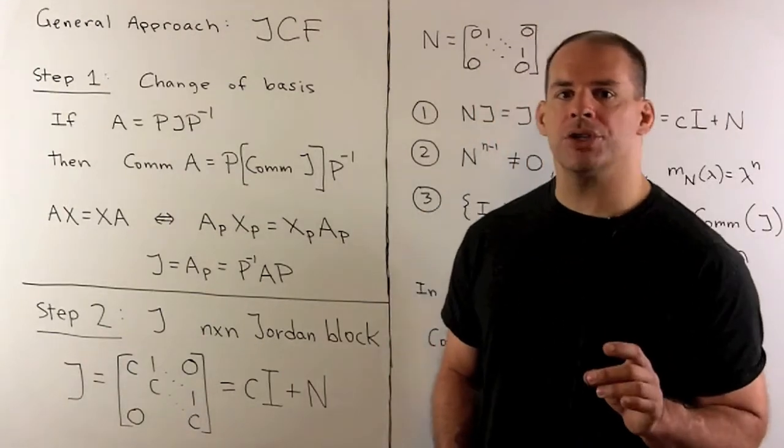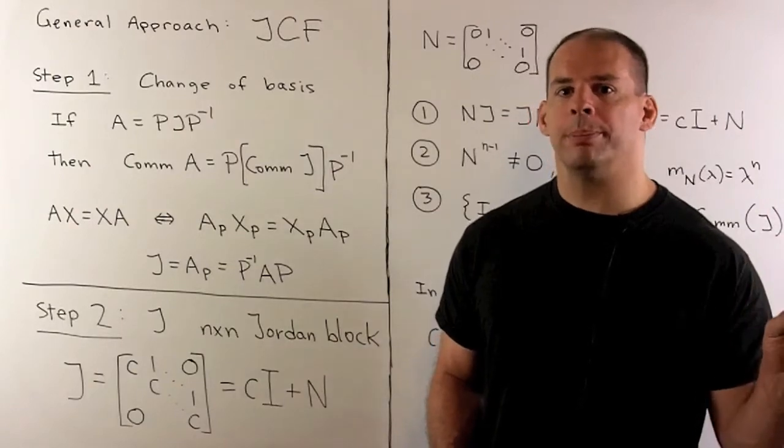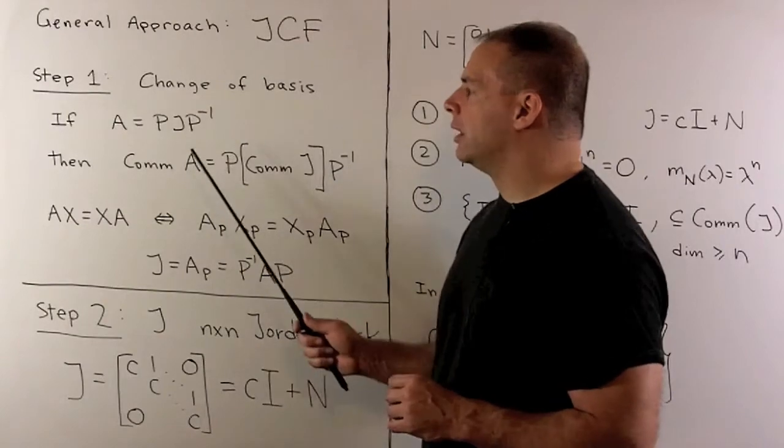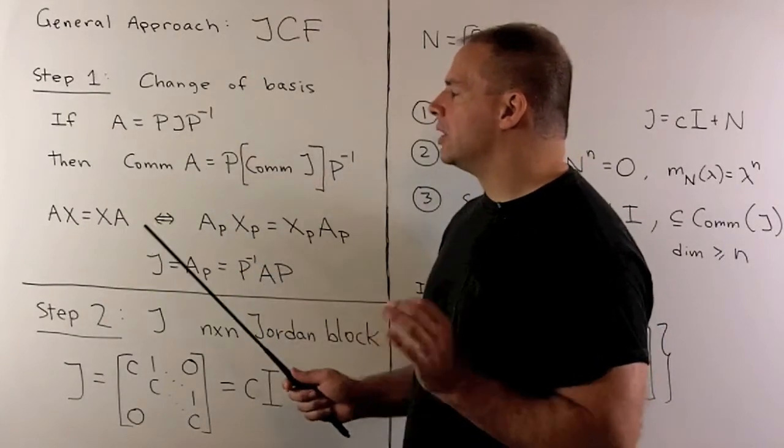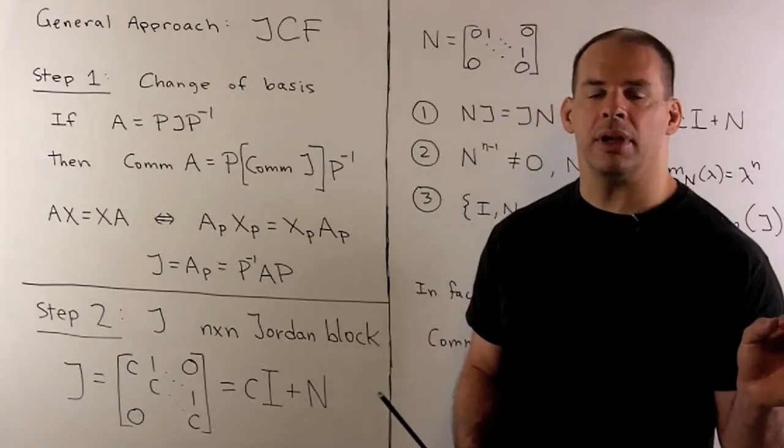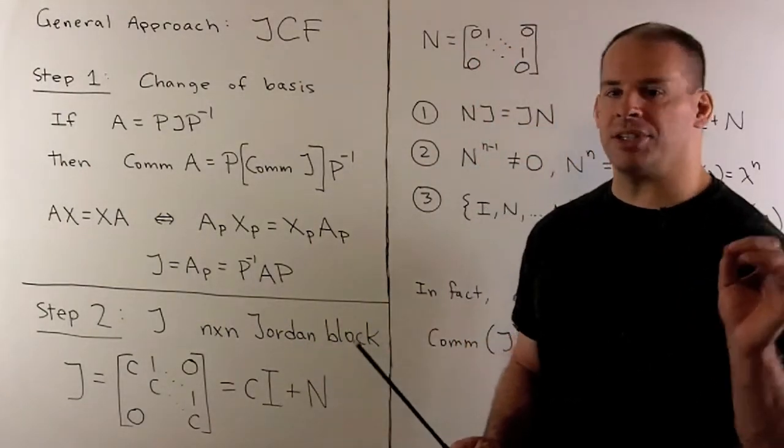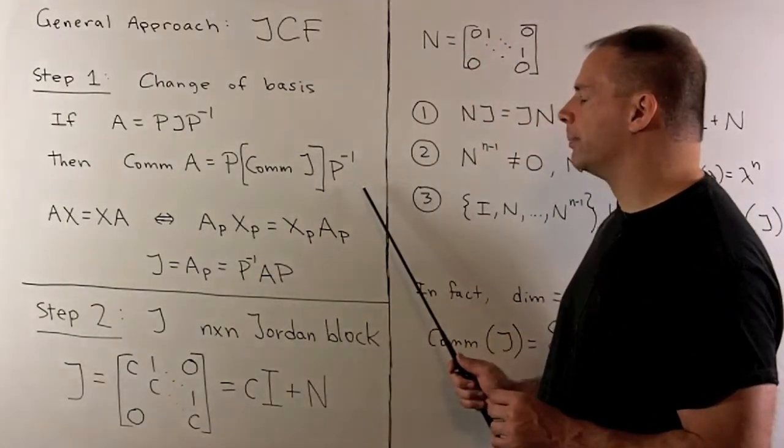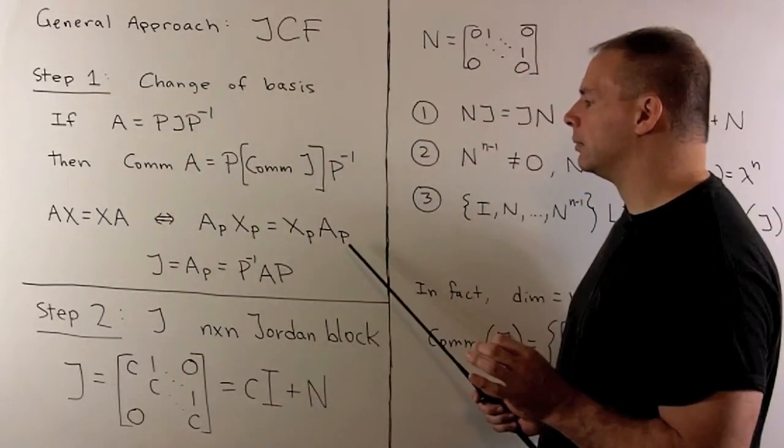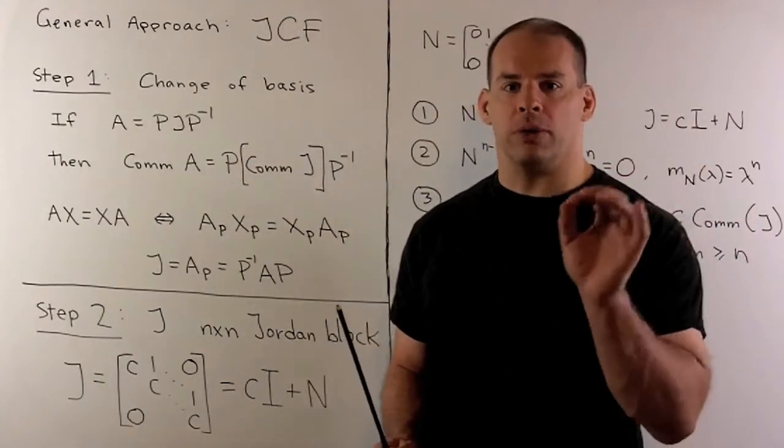Because we're over the complex numbers, every matrix A is similar to a matrix J in Jordan form. That means there's some change of basis with matrix P such that A and J are similar by conjugation by P. If that's the case, then the commutant of A is just given by taking the commutant of J and then conjugating by P. So that'll follow by interpreting this equation here.